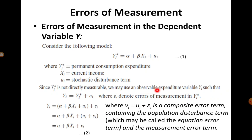Since yi* — permanent consumption expenditure — is not directly measurable, what we observe instead is the observable expenditure variable yi, which can be understood as yi* plus a measurement error term εi. So εi measures the errors in the measurement of yi*, and yi is described as yi* plus a white noise error term.